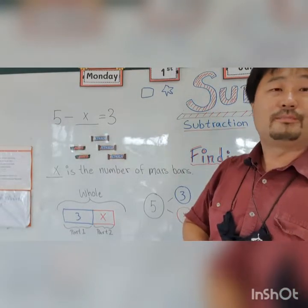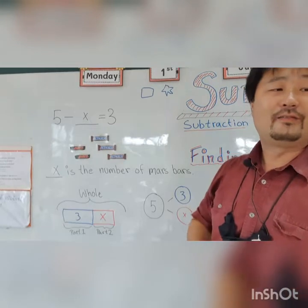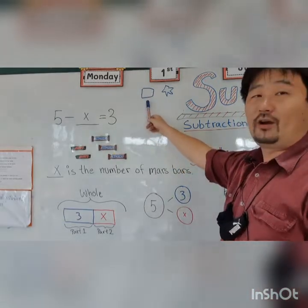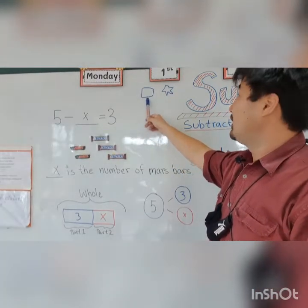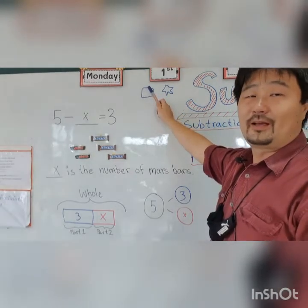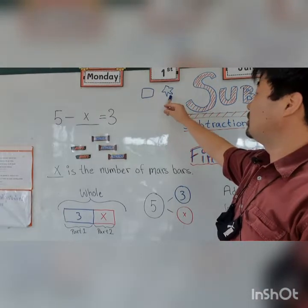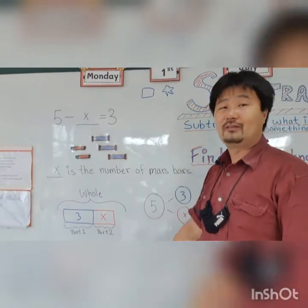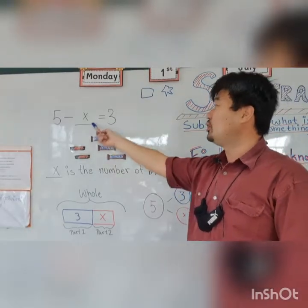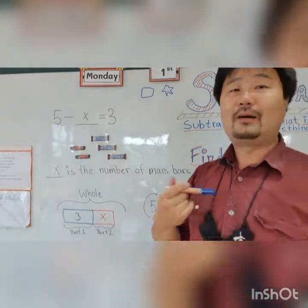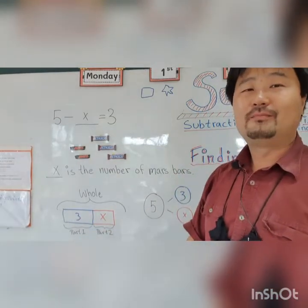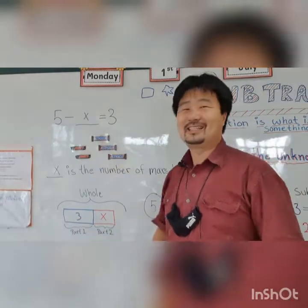In the book, page 95, you'll find finding the unknown in number sentences. In the book they use squares — that's an unknown, so you have space to write a number there. Or they use stars. So on page 95 they're using boxes or stars as unknowns. But I'm using X. You can use any letter — A, B, C, D, E, F — but I like to use X as the unknown.